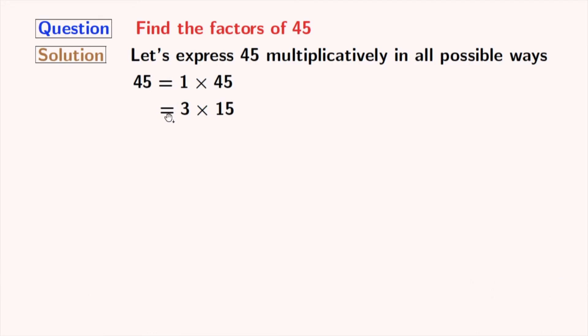Next number, 4, does not divide 45. Next comes 5, which gives us 5 times 9 equal to 45.